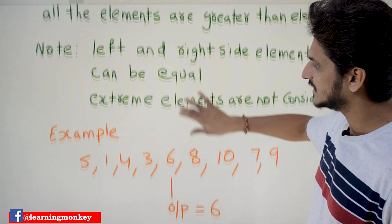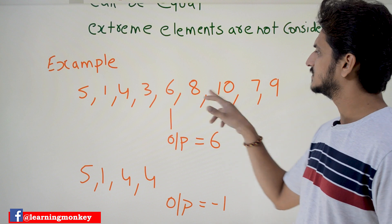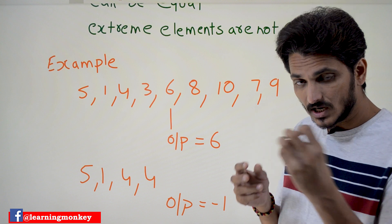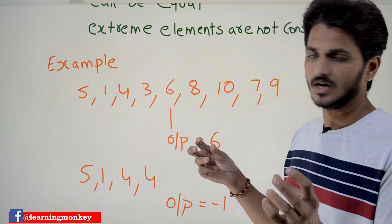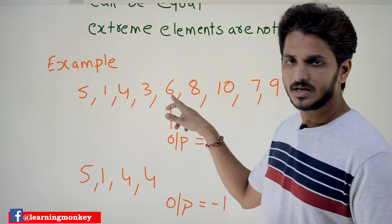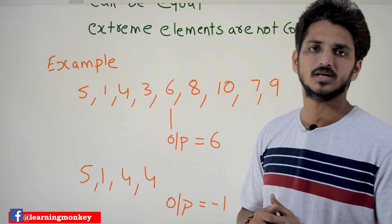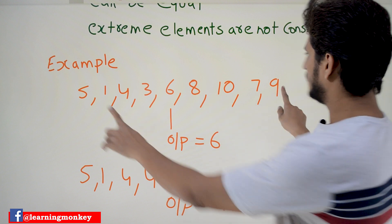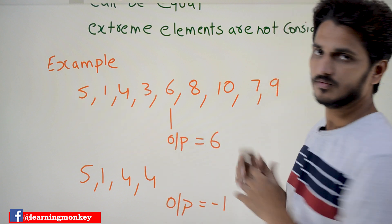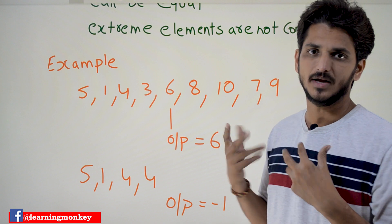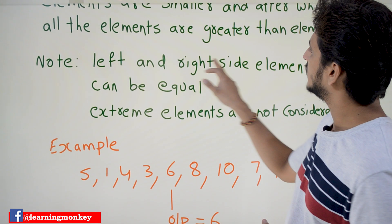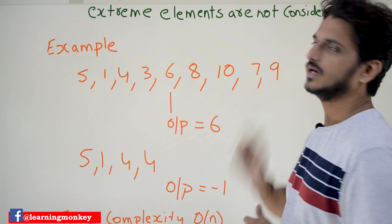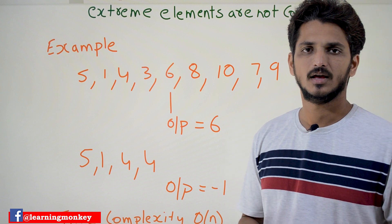We are going to understand this with an example: 5, 1, 4, 3, 6, 8, 10, 7, 9. We need to identify an element for which the left side elements are smaller and the right side elements are greater. So 6 is the element which has left side elements smaller than 6 and right side elements greater than 6. Extreme elements 5, 1, 9 are not considered. The note says left and right side elements can be equal, so we can have element 6 on either side. The output should be 6.